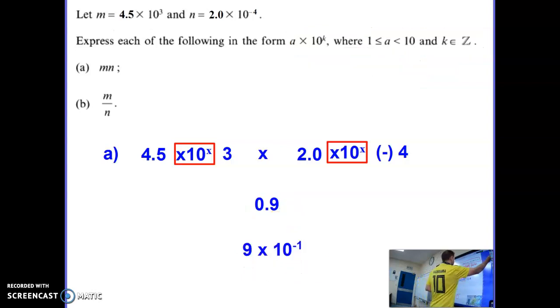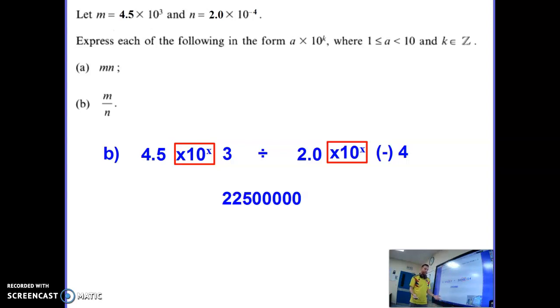Then we'll go on to the dividing one. We do exactly the same thing, enter our values, divide, and our calculator display will show this. Convert it into standard form to get the full answer. Place a point after the first digit and we get 2.25 times 10 to the power of 1, 2, 3, 4, 5, 6, 7—times 10 to the power of 7.